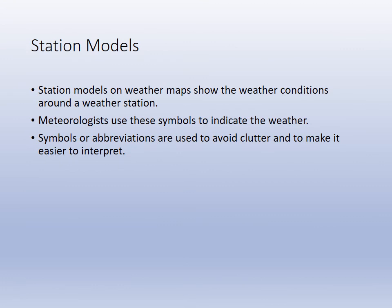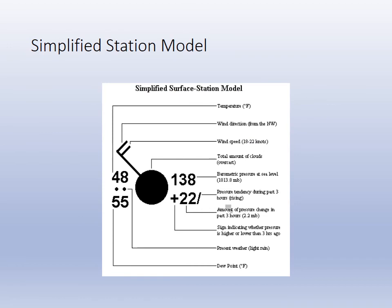The last topic today is the station model — how meteorologists transfer weather information in symbolic fashion. As part of your reference tables you have a simplified station model. The first element is wind direction and speed. The fletching shows where the wind is coming from, and the flags indicate speed: a long tail represents 10 knots and a shorter one represents 5 knots. The barometric pressure is given in shorthand — the last three digits with a decimal inserted.